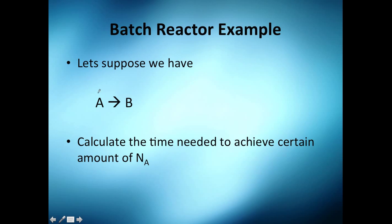Let's suppose we have this reaction, A transforms into B. Now they tell you calculate the time needed to achieve a certain amount of moles of A. Of course you got initial moles of A and you're going to end up with another quantity of A since it is reacting.